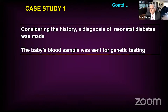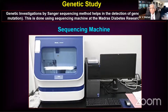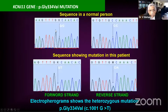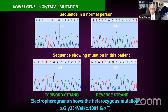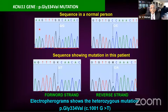Neonatal diabetes was suspected and we sent the blood for genetic testing, which we do ourselves in our own ICMR lab. We have a sequencing machine all set up — it is now very routine for us, like doing C-peptide. In a normal person you find GG or CC in the electropherogram, whereas in this child's electropherogram we found GT — you can see the curve is mutated with peaks on top of each other. This mutation was confirmed in the forward strand, and in the reverse strand we found CA instead of CC.